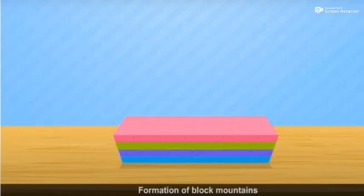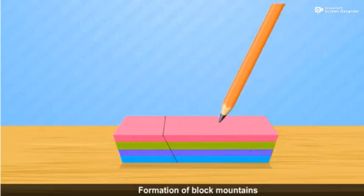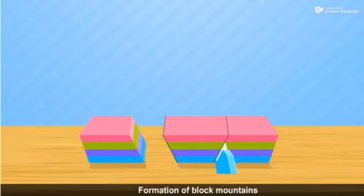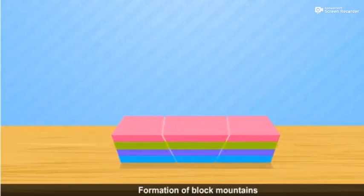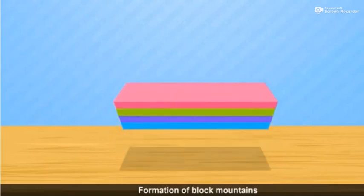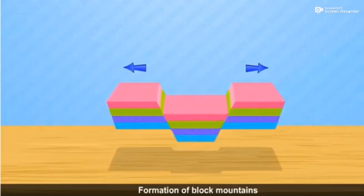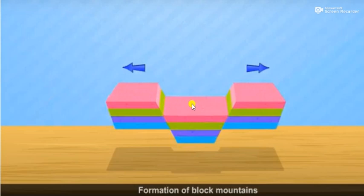To understand the formation of block mountains, you can do this illustration at home. Take an eraser, make lines on it on either side, and cut the eraser from there. When you cut and separate the pieces and put them back, hold the sides and lift the eraser up. As you slowly loosen it, the eraser in the middle sinks down. The erasers on either side remain elevated — these represent block mountains.